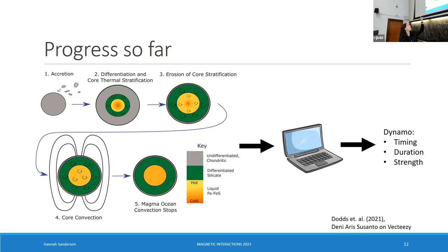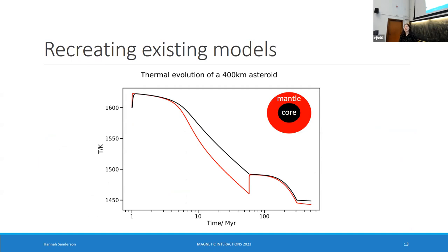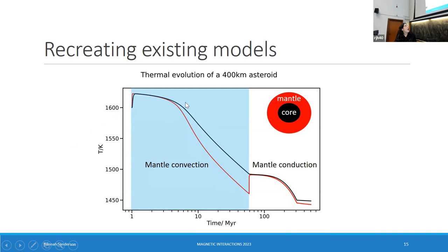As it's work in progress, steps one and two of differentiation still need some work, but steps three to five are done. Here are some nice plots recreating some existing models — I've mostly been trying to recreate work by James from 2019 and Catherine from 2021. We've got a black line which is the core and the red line is the mantle. We can see initially we have radiogenic heating, so the mantle and the core both heat up, then the mantle convects and begins to cool. The core cools more slowly because it's got this big hot mantle on top of it. Then there's a point where the mantle becomes potentially solid and just conducts, and at that point we see a jump in temperature as the mantle and the core come to the same temperature.